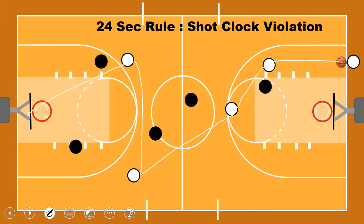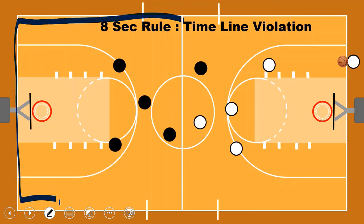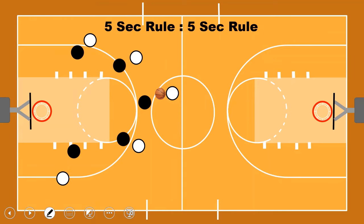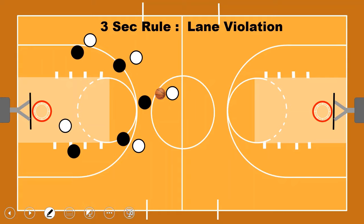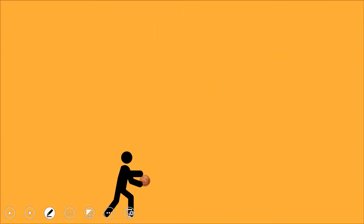There are several violations. First, the shot clock violation: the team with the ball has 24 seconds to take an attempt at the basket. If they don't, the other team gets the ball. Second, the eight-second rule: the team must move the ball past the half-court line within eight seconds — called a timeline violation. Third, the five-second rule: if a player doesn't move, dribble, or pass within five seconds. Fourth, the three-second rule: an opponent cannot stand in your free throw lane for more than three seconds — called a lane violation.